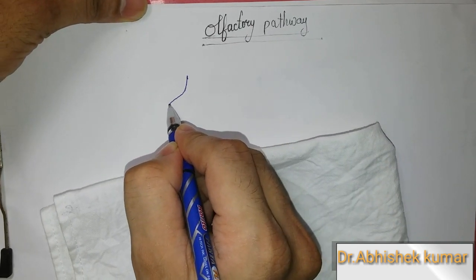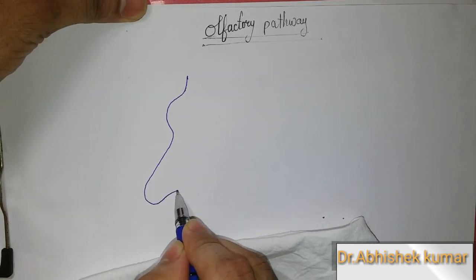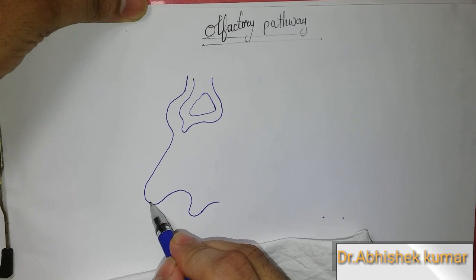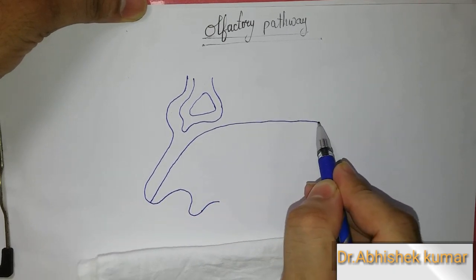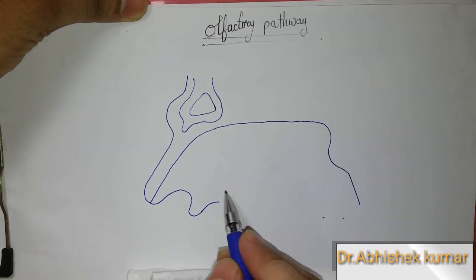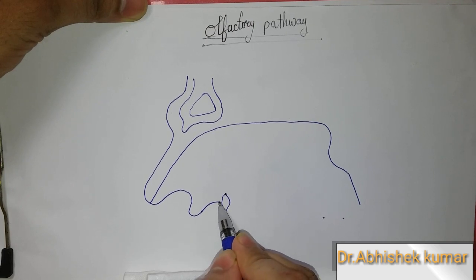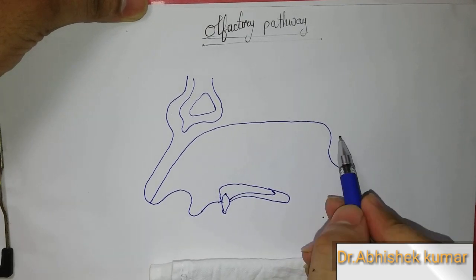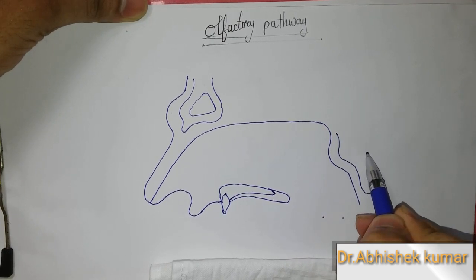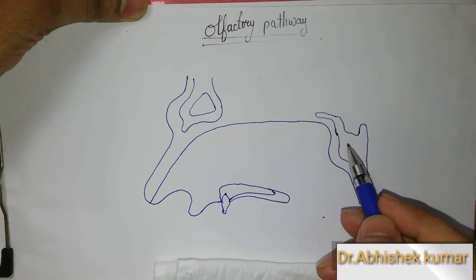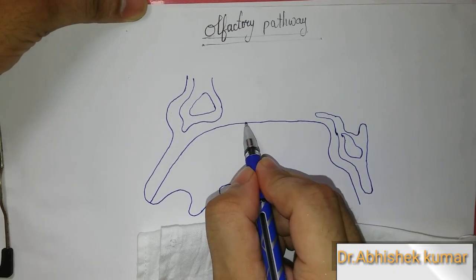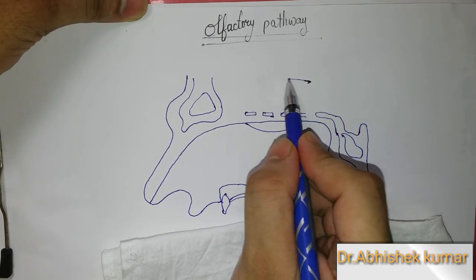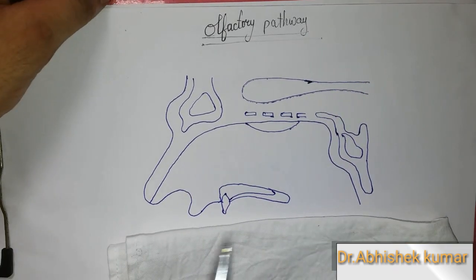I am drawing the nasal cavity diagram from which the olfactory nerves arise. This line separates the mucous membrane of the olfactory pathway. Here are the teeth and the hard palate. The sphenoidal air sinuses are present here, and here is the olfactory mucous membrane.